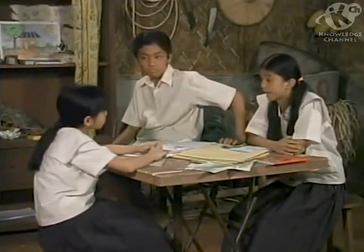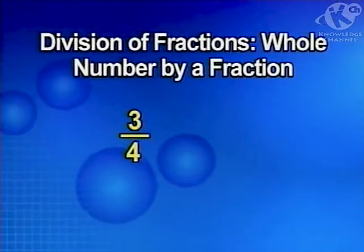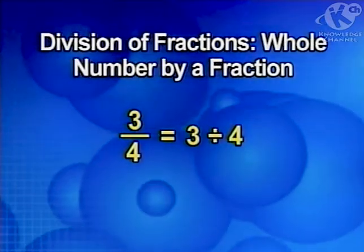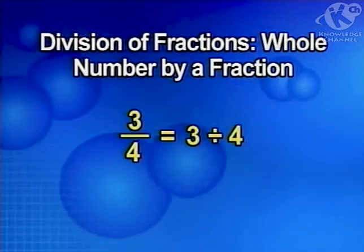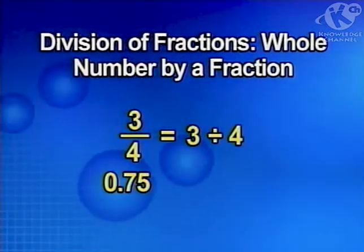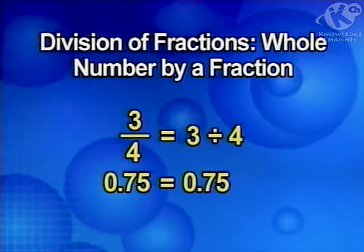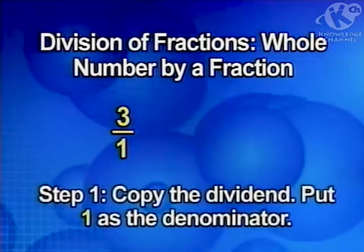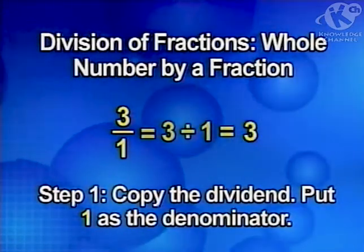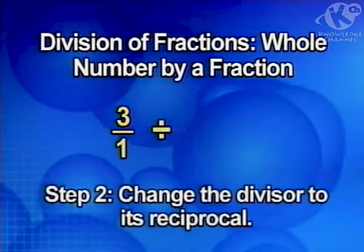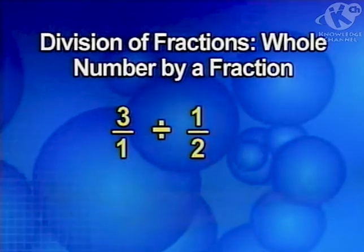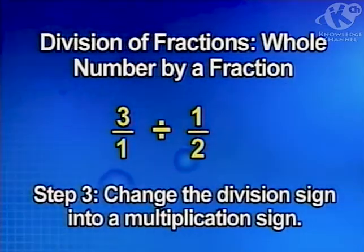Fractions are also expressions of division. Like three-fourths, for example — it is the same as three divided by four. The fraction three-fourths is equal to the decimal seventy-five hundredths. Three divided by four is also equal to seventy-five hundredths. So three over one, or three divided by one, is equal to the whole number three. Next, we change the divisor one-half to its reciprocal, then change the division sign to a multiplication sign.